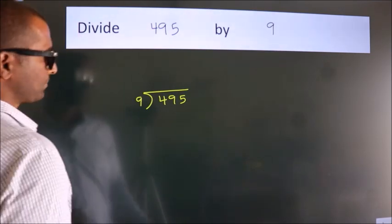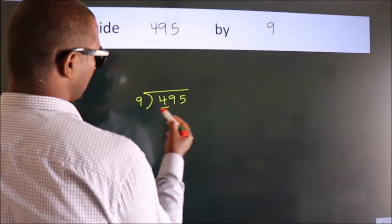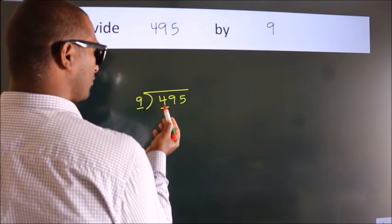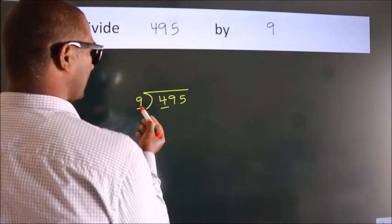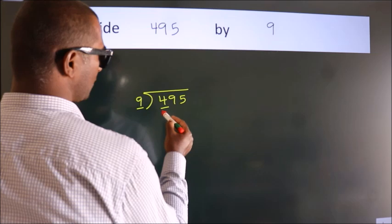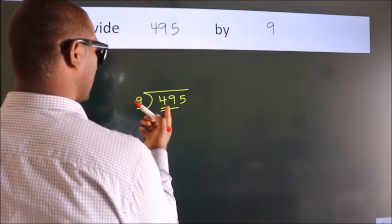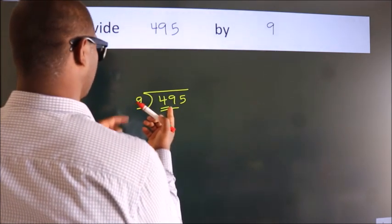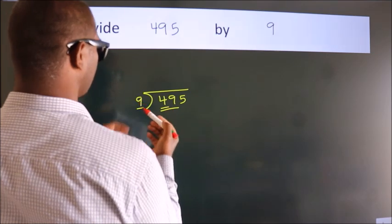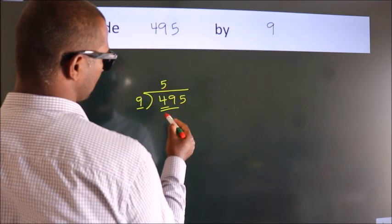Next, here we have 4, here 9. 4 is smaller than 9, so we should take two numbers, 49. A number close to 49 in the 9 table is 9 fives, 45.